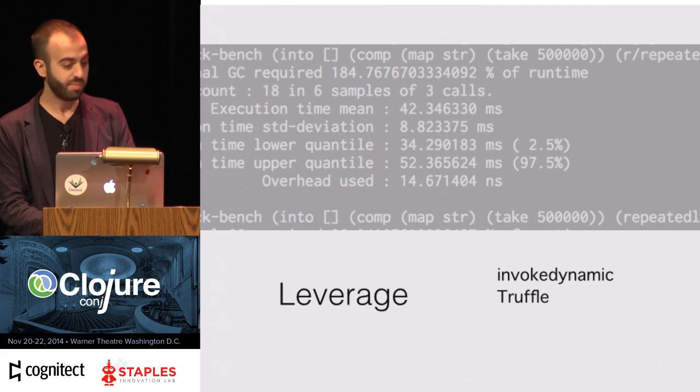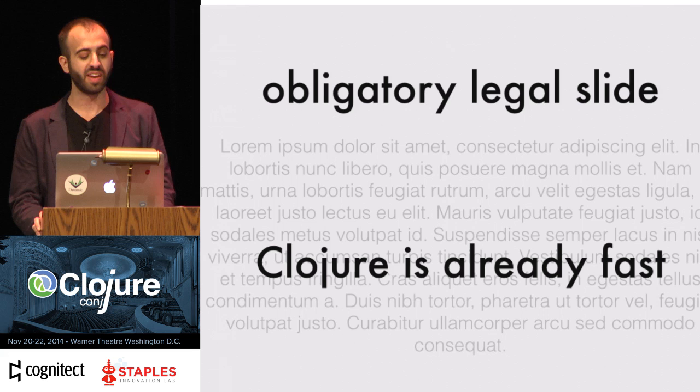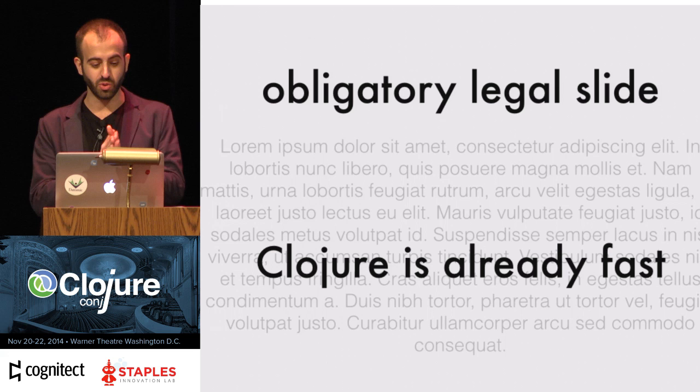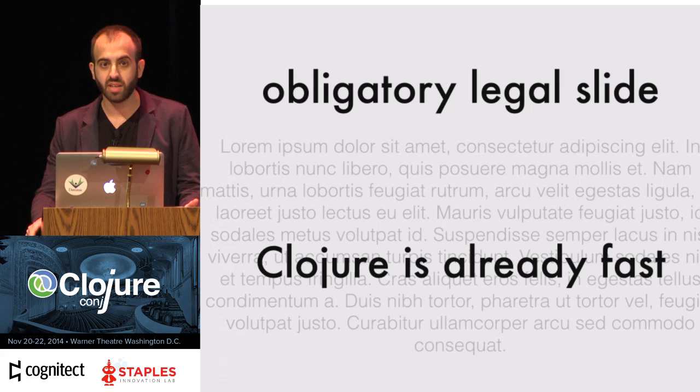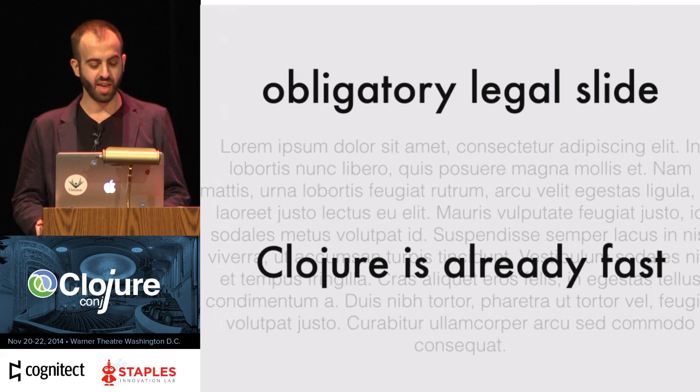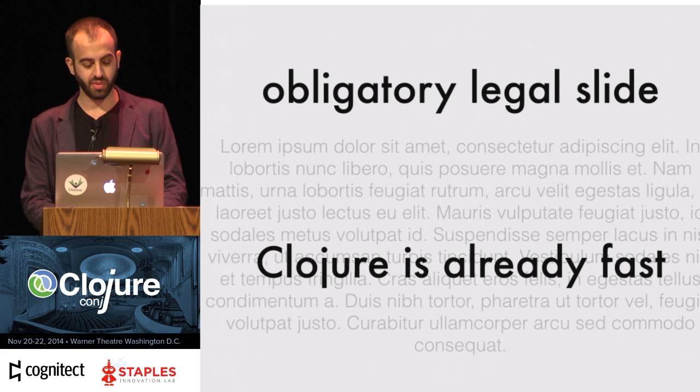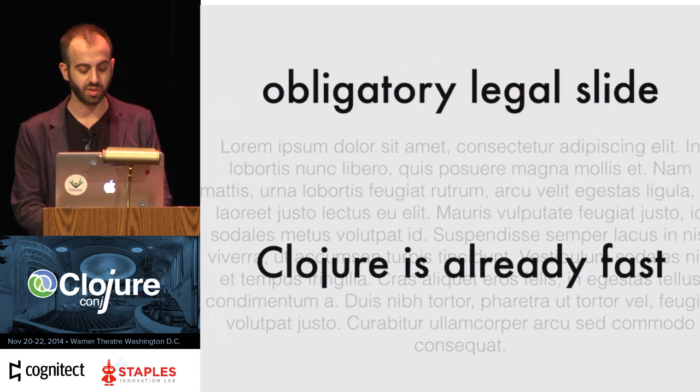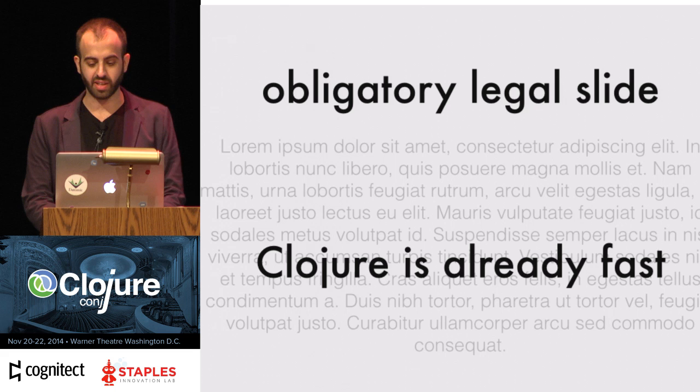Before we get going, I have a little disclaimer to tell you that Clojure is already fast. It already gives us a lot of abstractions to do what we need and get the performance we require. We can use core.async, we have reducers, we have folders — there's so much. But there could be so much more from the host platform. We hear about premature optimization being the root of all evil, but the rest of the quote says we shouldn't pass up opportunities available to us.